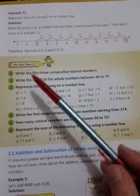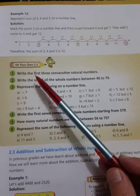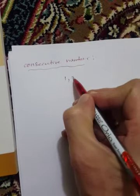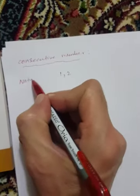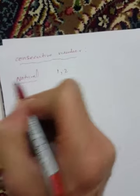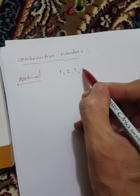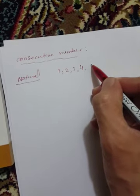Exercise 2.2, first question: write the first three consecutive natural numbers. Consecutive number means one number followed by another. For example: one, two, three, four, six.